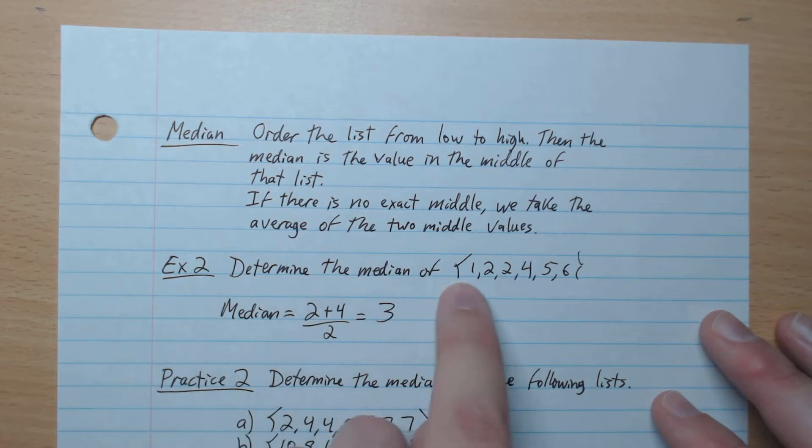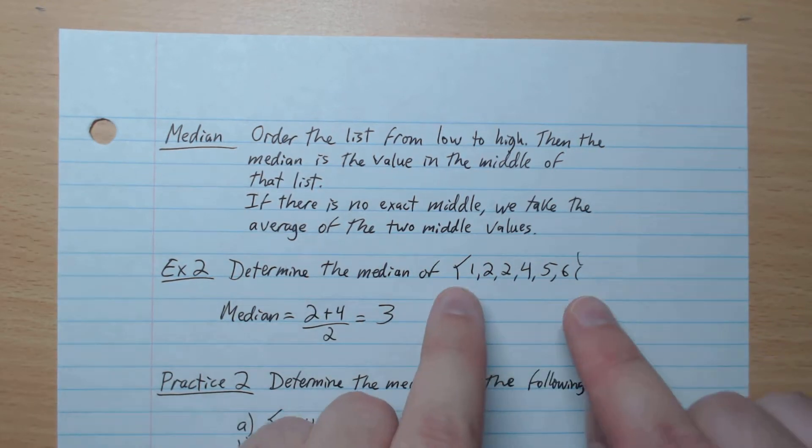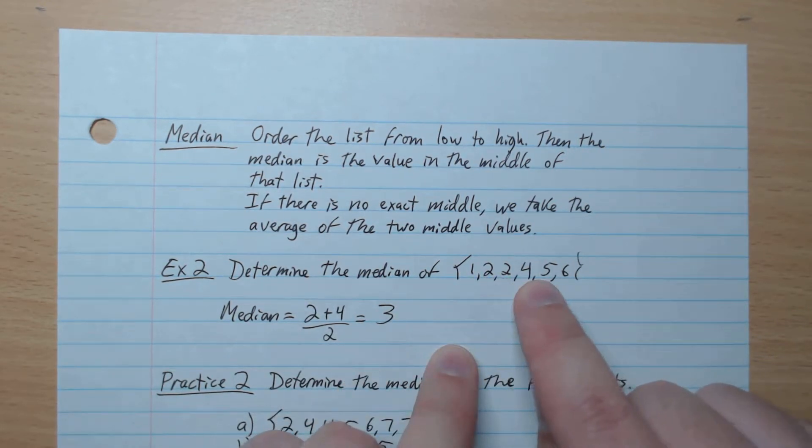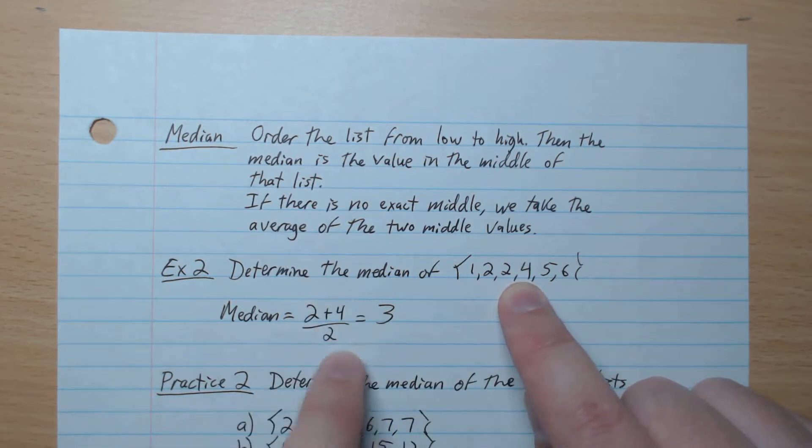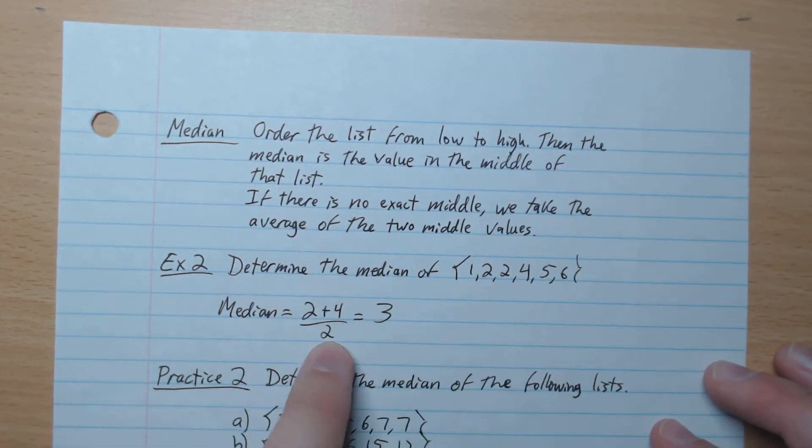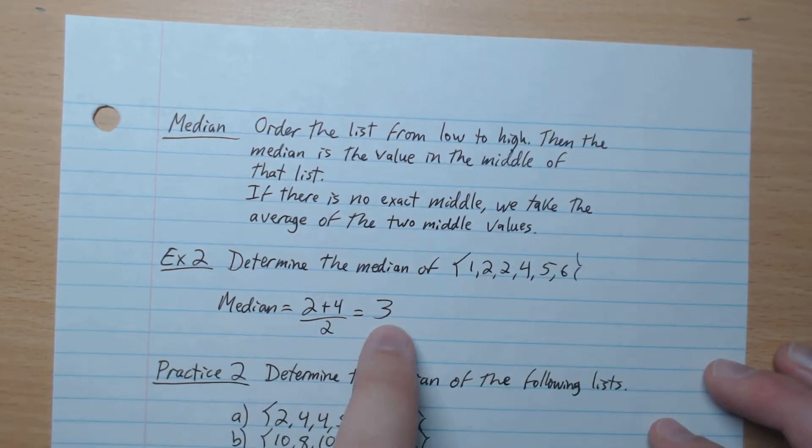So example two, determine the median of this list. So we notice we go middle, middle, middle, so 2 and 4 are the middle. So we add it up and get the average. So 2 plus 4 over 2 gives 3, like that. So the median of this list is 3.